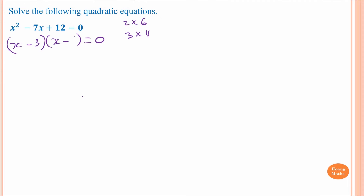So the factors are 3 and 4 — it doesn't matter where you put them because both are negative. You can put 3 there and 4 there, or 4 here and 3 here. Therefore x is equal to 4 or x is equal to 3.